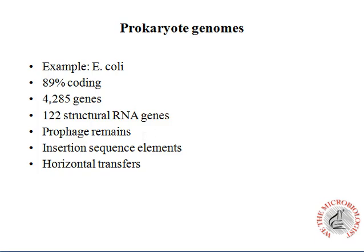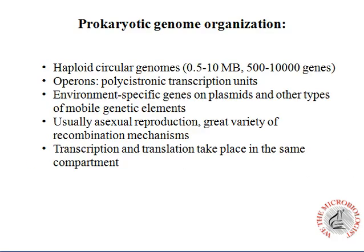Sometimes you find in the E. coli chromosome that prophage remains — that is, when a phage enters a lysogenic cycle, certain genes get inserted into the chromosome. You will also find some insertion sequence elements. Horizontal gene transfer is one good mechanism found in E. coli, where they can transfer some genes to other bacteria.